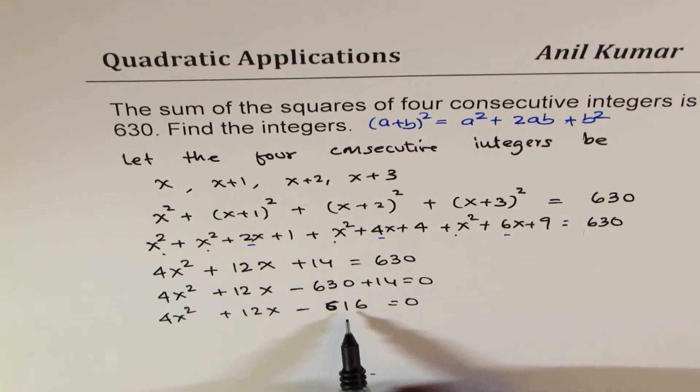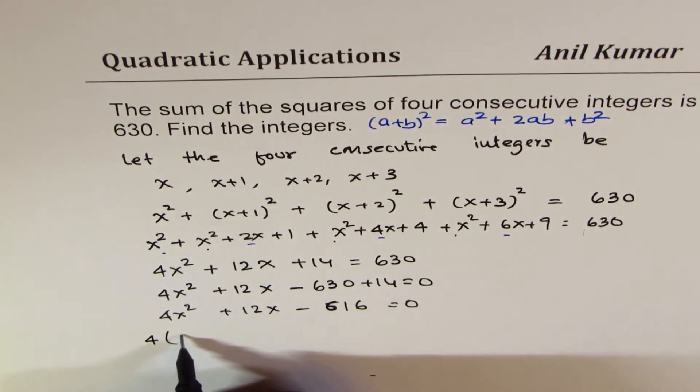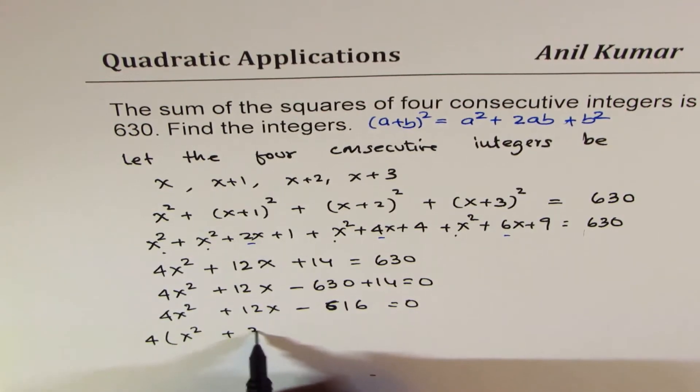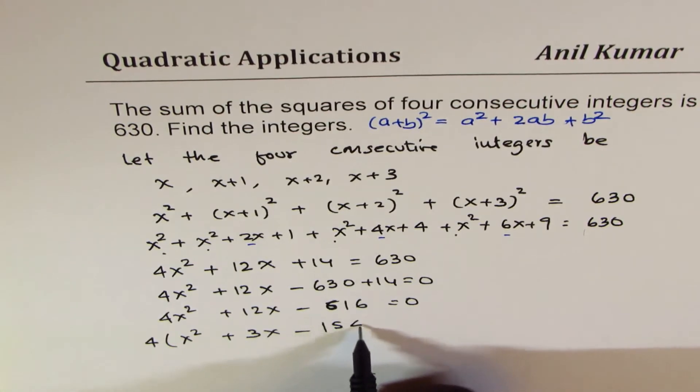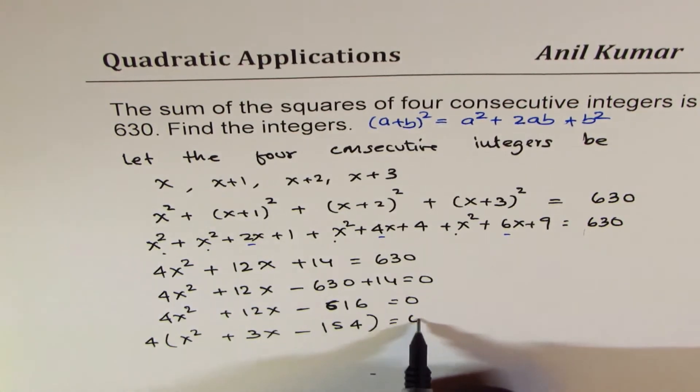Now we could divide this by 4. So let's take 4 common. So we get x square plus 3x minus 4 times 154 equals to 0.